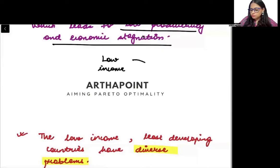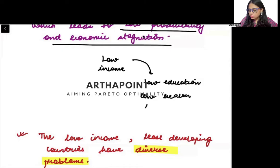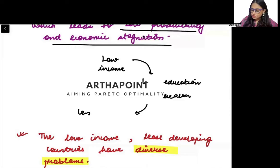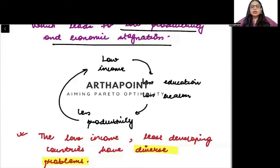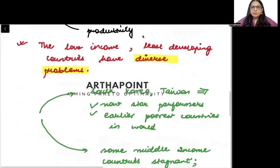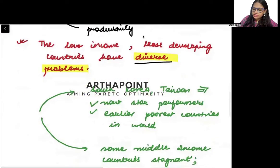So the circle is: low income → low education → low health → less productivity → less output → less input → thus low income. Least developed countries have diverse problems rooted in this cycle.